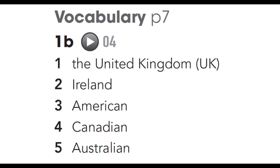Starter Unit Vocabulary Exercise 1B. 1: The United Kingdom. 2: Ireland. 3: American. 4: Canadian. 5: Australian.